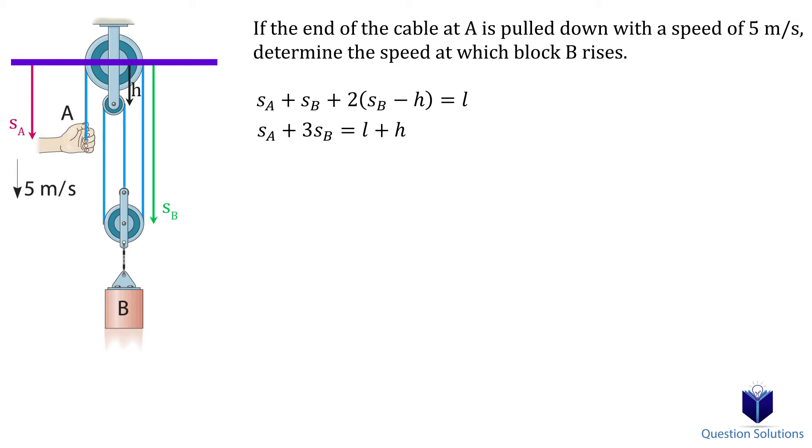So now, let's simplify our equation. And then we will take the derivative to get the velocity. All the constant values, like the total length and the H value, become zero. Now we can plug in the speed of A and solve for the velocity of the block.